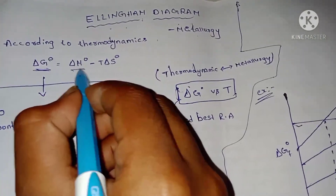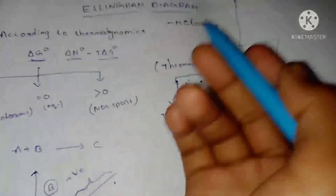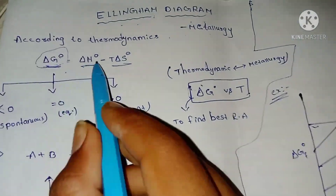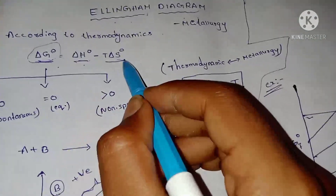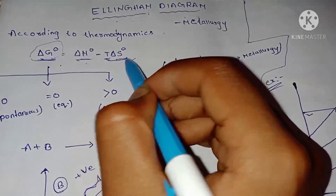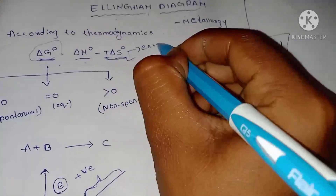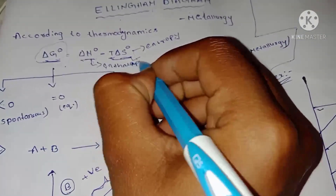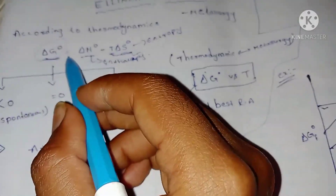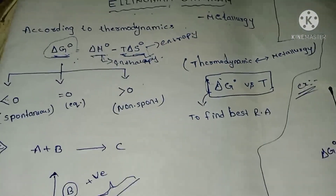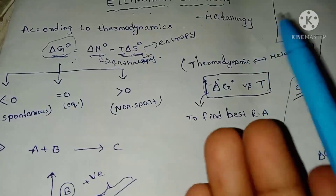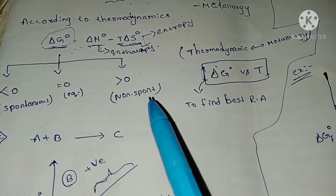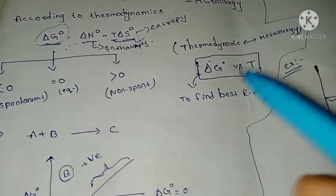Delta G⁰ is equal to Delta H⁰ minus T times Delta S⁰. Delta G⁰ means Gibbs free energy. Delta H⁰ means change in enthalpy. T means temperature, and Delta S⁰ means change in entropy. This equation tells us whether a reaction is spontaneous or non-spontaneous, that is, feasible or not feasible.